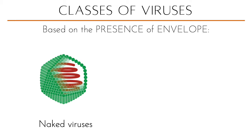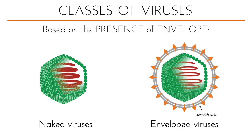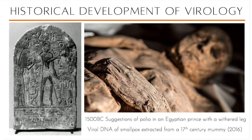Now I will discuss the historical development of virology. As early as 1500 BC, there were suggestions of the clinical manifestations of polio in an Egyptian prince with a withered leg, as seen in the image. That could be anything, but as early as then there are signs of the pathologic consequences of certain viral diseases.